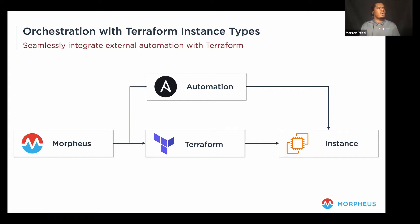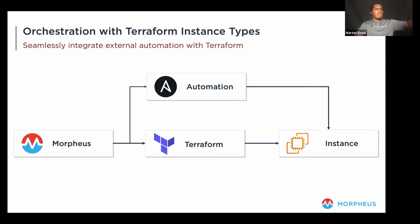A question came through: will Terraform-based instances have access to all the option lists as instances created via Morpheus? The provisioning workflows will have the option types. Regarding a specific question around option lists for existing networks and data stores, I'm not sure — we'll have to follow back on that as I get more information.